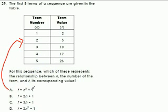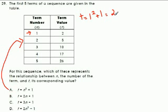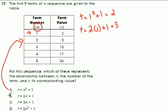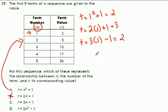The first equation says t equals n squared plus 1. Starting with the first term, n equals 1: 1 squared is 1 plus 1 is 2. So that is true. The next one: t equals 2 times 1 plus 1 equals 3. So that one is not true. The next one: t equals 3 times 1 minus 1 equals 2. So that could be.